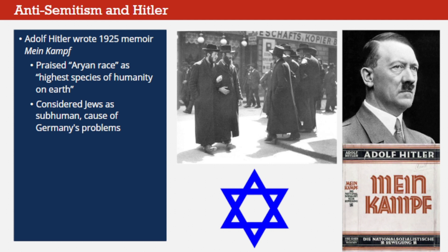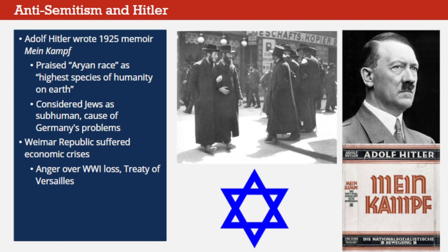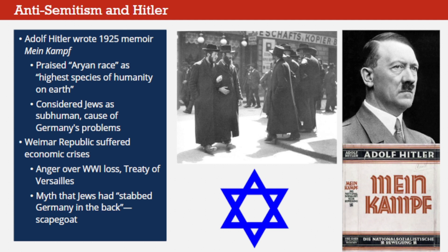Germany between the world wars was a troubled country. Citizens of the Weimar Republic, the name for the German state from 1919 to 1933, suffered severe economic crises. Many Germans were angry that their nation had lost World War I and was subject to the crippling punishments outlined in the Treaty of Versailles. Hitler propagated a widely believed myth that German Jews had stabbed Germany in the back at the end of the war, causing its defeat. In the years between the world wars, far too many Germans were willing to accept this view of the Jewish people as a national scapegoat for their country's problems.